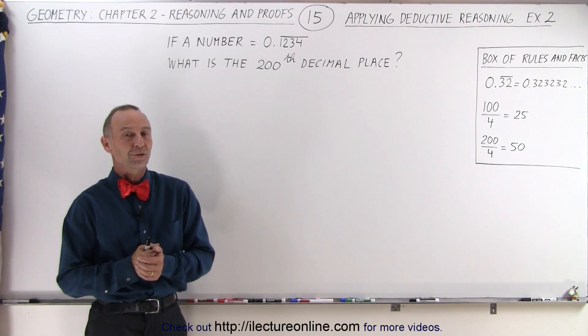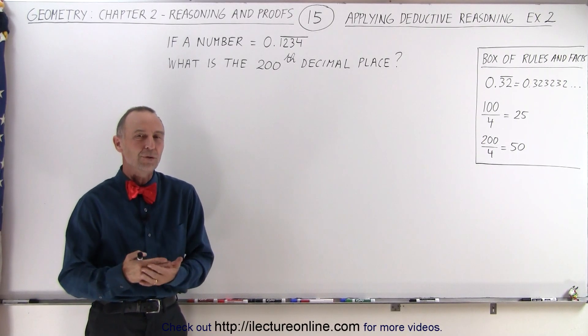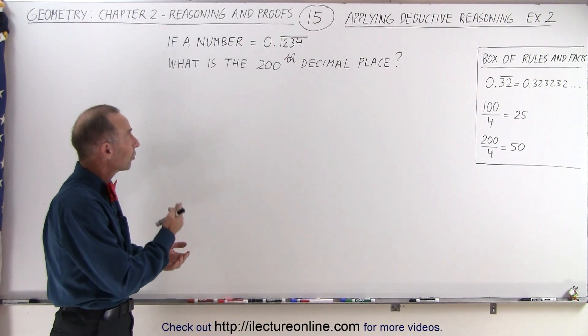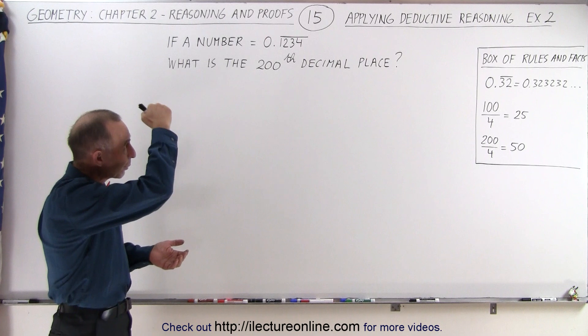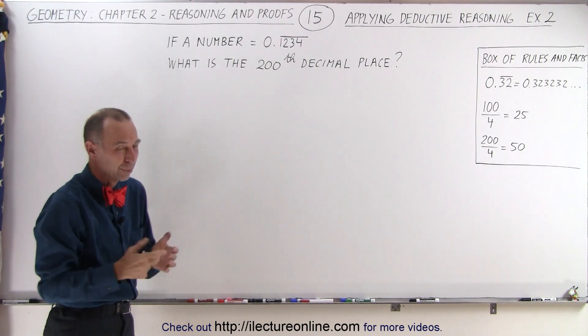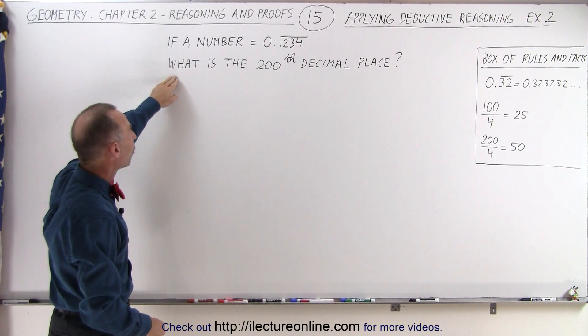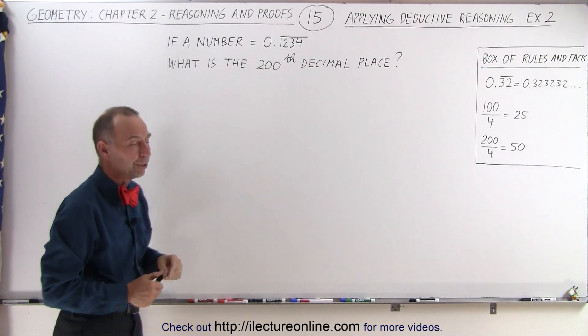Welcome to our lecture online. Here's our second example of how we use deductive reasoning. Here we're given that a number is equal to 0.1234 with a line on top of that. Of course we need to understand what that means. And then we're asked, what is the 200th decimal place of that number?